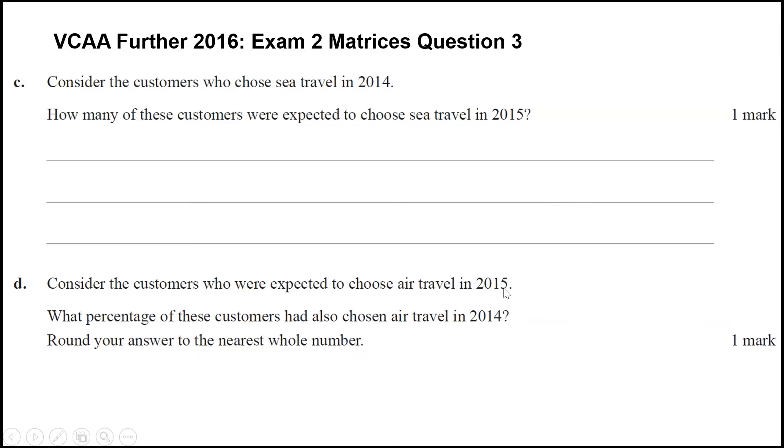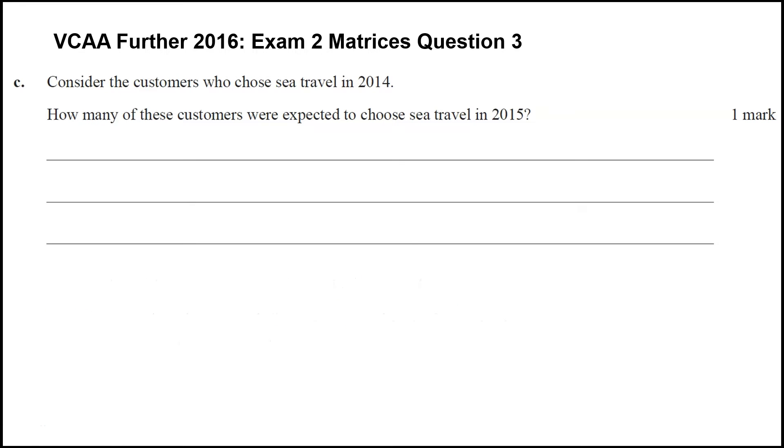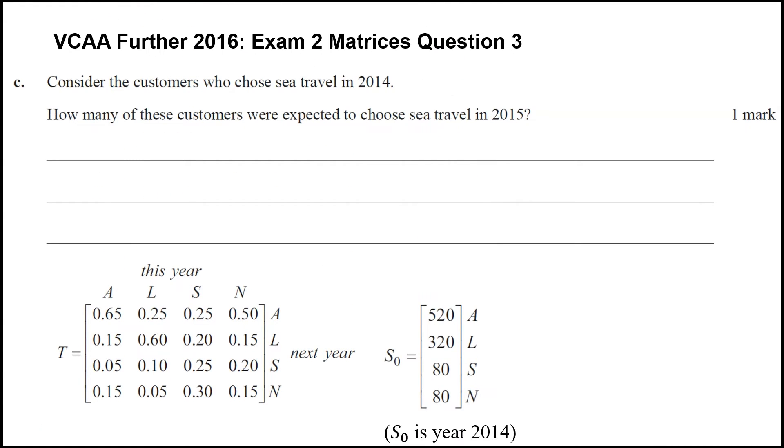So of those customers who chose air travel in 2015, if we go back a year, what percentage of them would have chosen air travel in 2014? So going backwards there is going to be a bit harder, but let's do C first. So we'll need to look at that transition matrix again, and our steady state matrix, which remember is 2014.